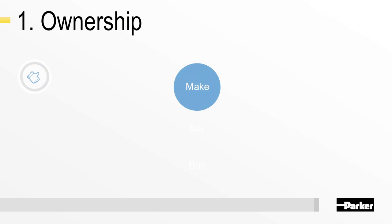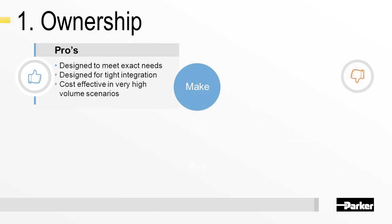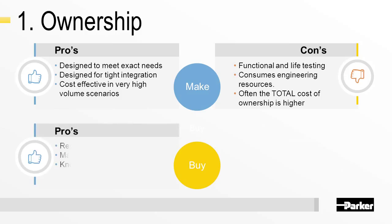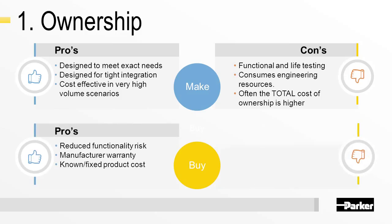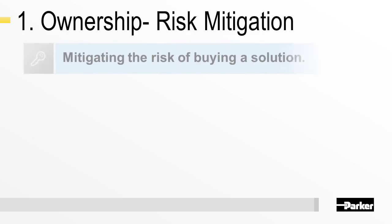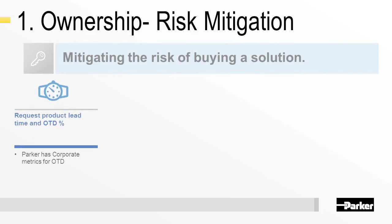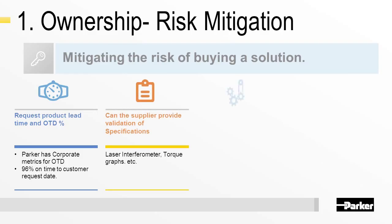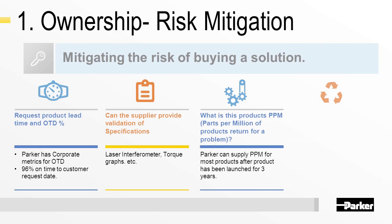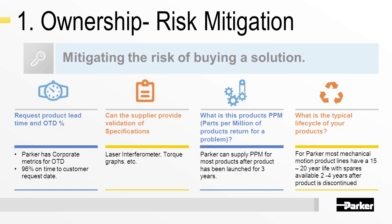For each, we'll discuss the potential options and weigh the benefits available to the designer, and highlight some potential traps of the options. After we discuss the options and their benefits and traps, we'll then cover the details on how you can mitigate those traps or risks. If you can mitigate the risks, you can reduce the chance that the option will delay or destroy your motion system design.